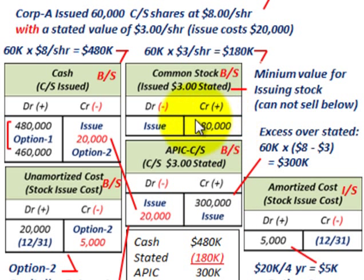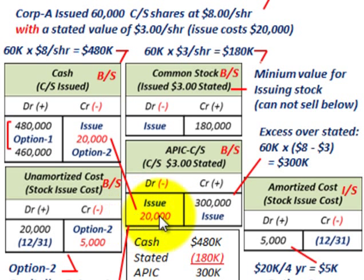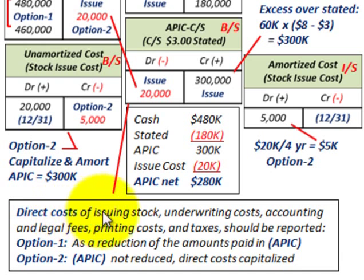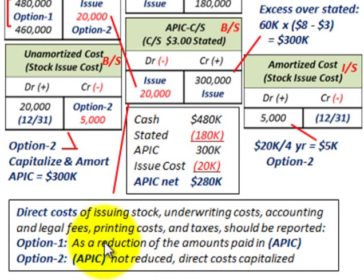We credit additional paid-in capital for $300,000 and common stock for $180,000, so the credits total $480,000, which balances with the cash debit of $480,000. Now we have to deal with the issue costs of $20,000. These are the direct costs of issuing the stock — underwriting costs, accounting fees, legal fees, printing costs, and taxes. We have two options for reporting them.